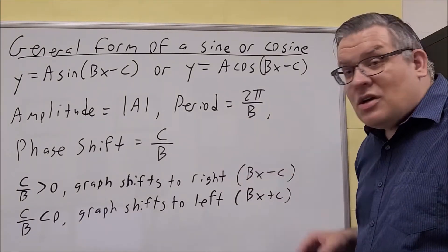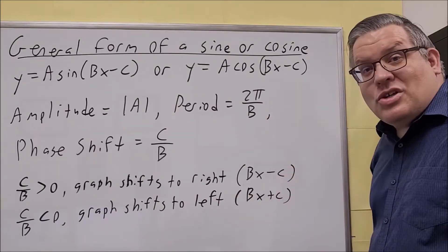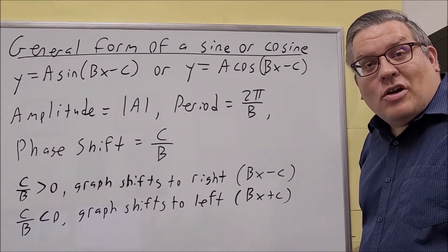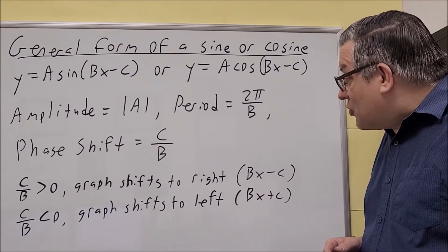So the formula is always C over B. But a shortcut way of doing that is just take the opposite sign of what you see inside the parentheses there. And that's kind of how I'm going to be doing that in the rest of the examples that are in this particular section.